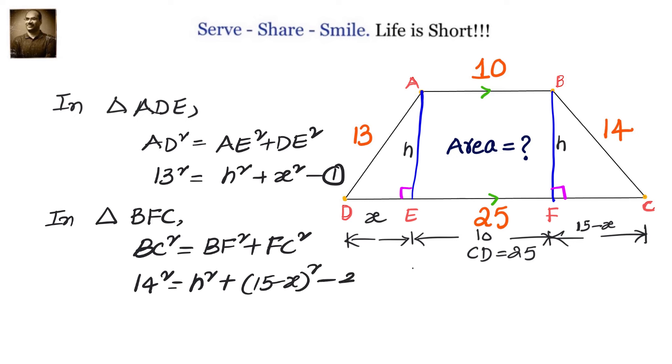Now this is our equation number two. From equations one and two, when we try to equate h², we will have from the first equation h² = 13² - x², and from the second equation we will get 14² - (15 - x)².